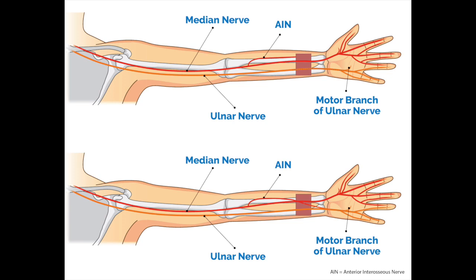Anytime you're placing a device in the upper extremity above the AC, ultrasound is mandatory and the nerves that you need to identify prior to puncturing are the median nerve and the ulnar nerve. The median nerve runs directly with the brachial artery and veins. The ulnar nerve in the upper arm runs deep to the basilic vein. As the median nerve comes down, it'll come down the radial side, which will innervate the radial nerve.